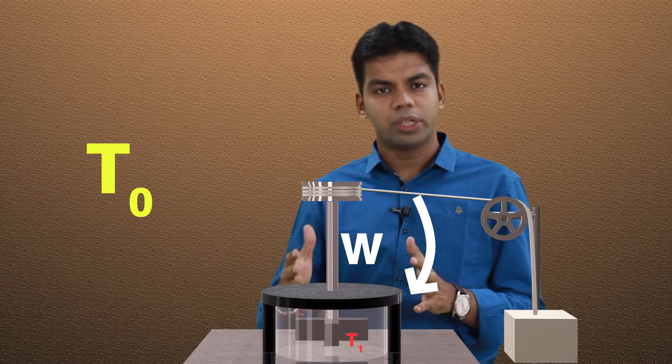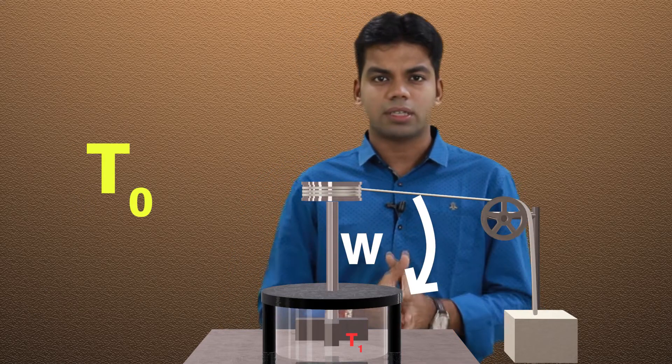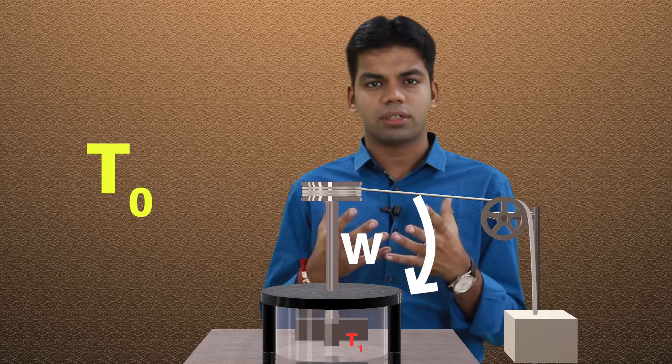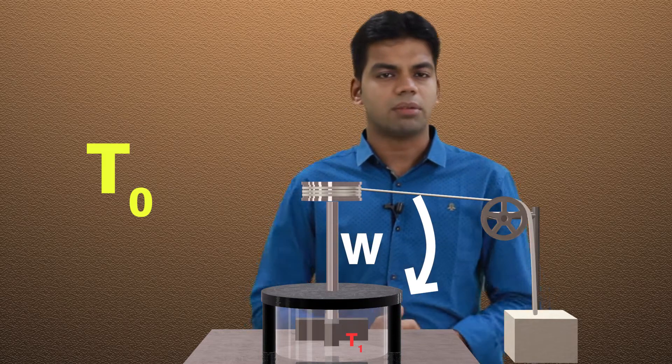Final temperature after doing certain work on it becomes T1, and the atmospheric temperature is T0. The temperature increased from T0 to T1. Because the vessel was insulated, the energy and temperature of the system increased.